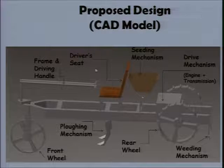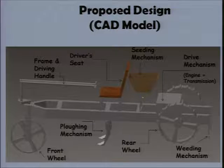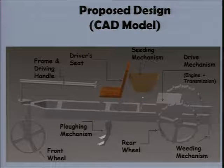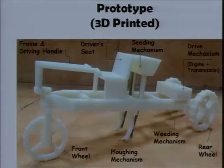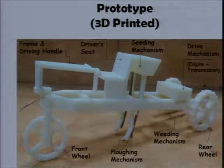Then we have a seeding mechanism just after the plowing mechanism, through which the seeds can flow into the plowed soil. And at last we have a weeding mechanism, through which we would be able to cut down the plants which would hinder the process. We worked on the mechanism for quite some time and then finally designed the components in software, and finally we could get out a print using 3D printing technology.